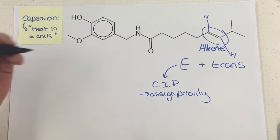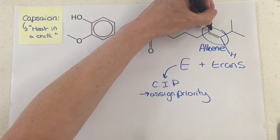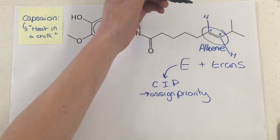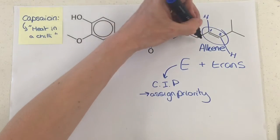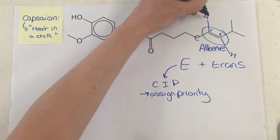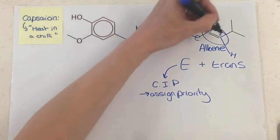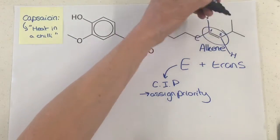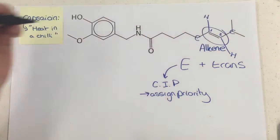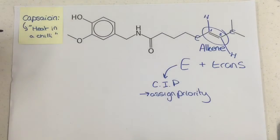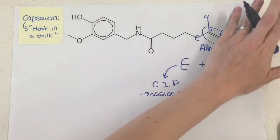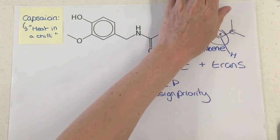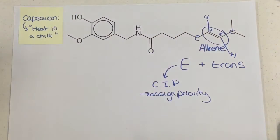We look at each carbon one at a time. If we number them one and two, we look at carbon one and its two groups — so it would be a carbon and a hydrogen. Then we look at carbon two and its two groups, starting with a carbon and a hydrogen just here. And to each one on its own — one first and then two — we assign priority.